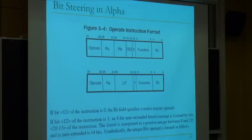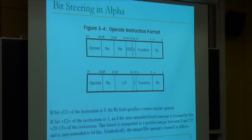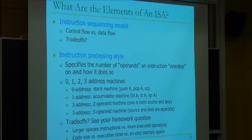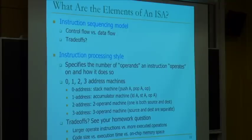The Alpha instruction size is 32 bits — whereas LC3B has 16-bit instructions. Alpha's opcode has five bits, meaning you can have more instructions in the ISA. What are the elements of an ISA? Besides instructions, there's the instruction sequencing model — control flow versus dataflow, sequential versus dataflow — and the instruction processing style, which specifies the number of operands an instruction operates on.